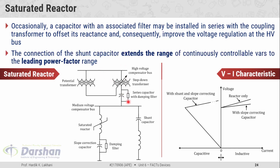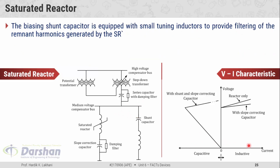The connection of the shunt capacitor extends the range of the continuously controllable volt-ampere reactives into the leading power factor, i.e., capacitive portion. In reactive compensation, excessive reactive power can be absorbed by the inductive element — the saturated reactor — while if the transmission system demands reactive power, that demand can be fulfilled by the shunt capacitor branch. This extends the reactive power compensation range into both the capacitive and inductive ranges. The biasing shunt capacitor is equipped with small tuning inductors to provide filtering of remnant harmonics generated by the saturated reactor.